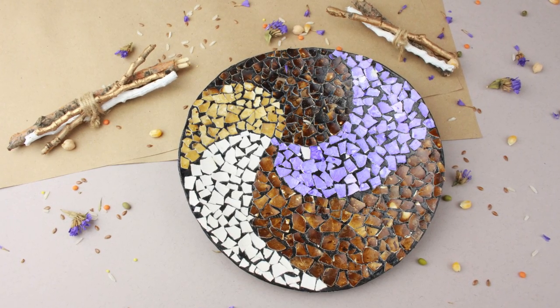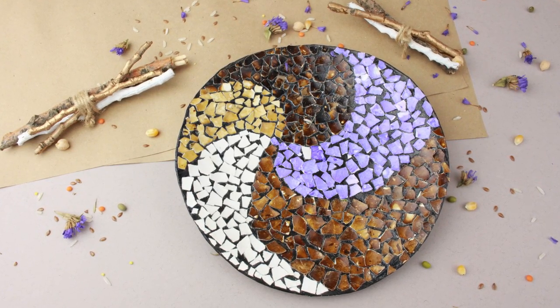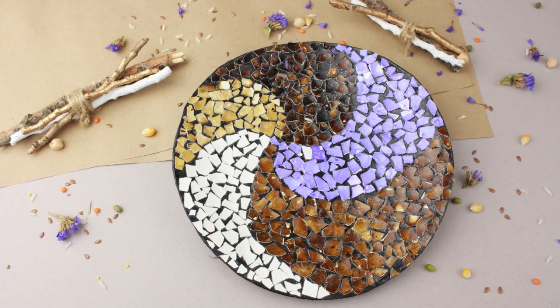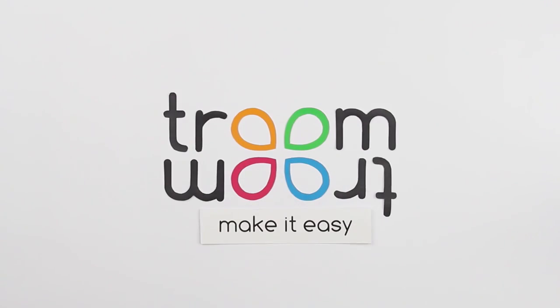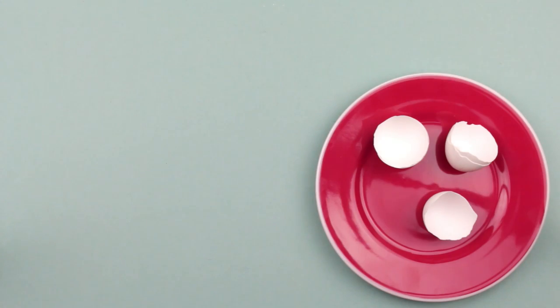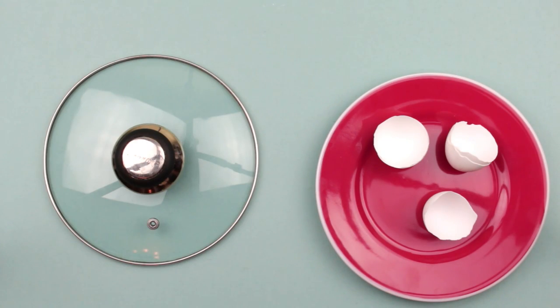Today's tutorial is about how to craft a handmade eggshell mosaic plate to decorate the wall. We'll need eggshells, a replacement knob handle pot lid, and brown and purple egg paint.